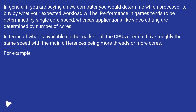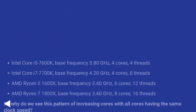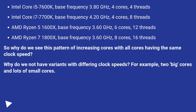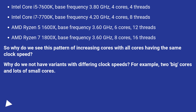For example: Intel Core i5-7600K, base frequency 3.80 GHz, 4 cores, 4 threads. Intel Core i7-7700K, base frequency 4.20 GHz, 4 cores, 8 threads. AMD Ryzen 5 1600X, base frequency 3.60 GHz, 6 cores, 12 threads. AMD Ryzen 7 1800X, base frequency 3.60 GHz, 8 cores, 16 threads.